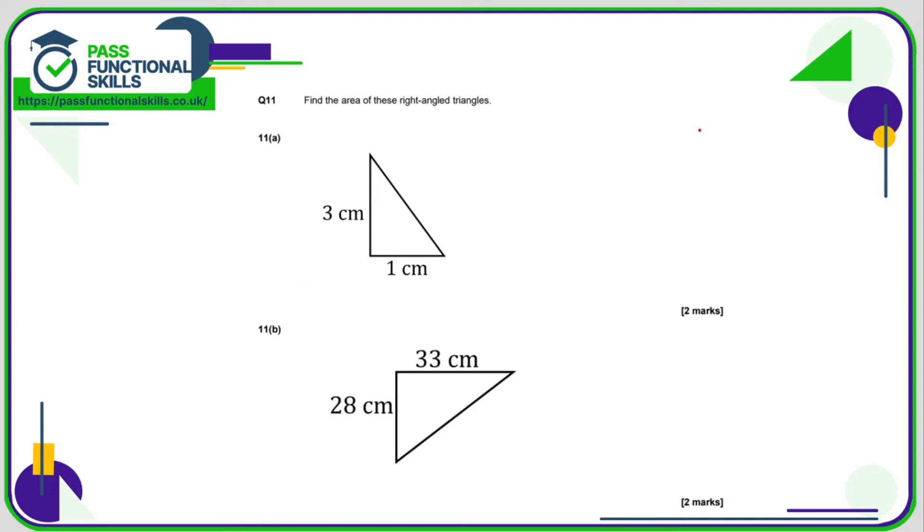On to the final question. Again, we can use a calculator here. Again, it doesn't matter that they're right angle triangles. Triangle is a triangle. The area is base times the height divided by 2. So 3 times by 1 divided by 2. You could probably do this in your head. 1 times 3 is 3. 3 divided by 2 is 1.5 square centimeters.